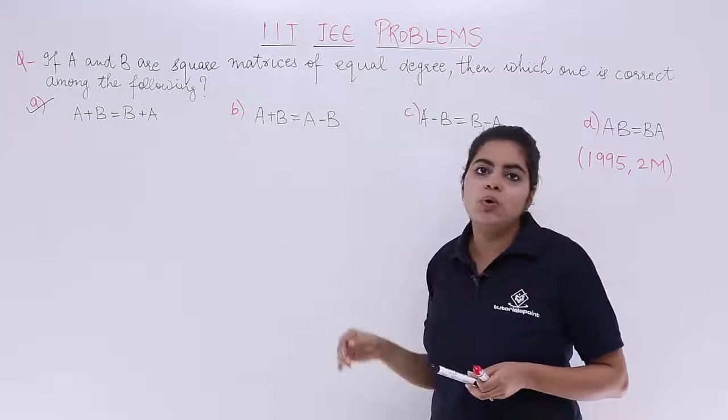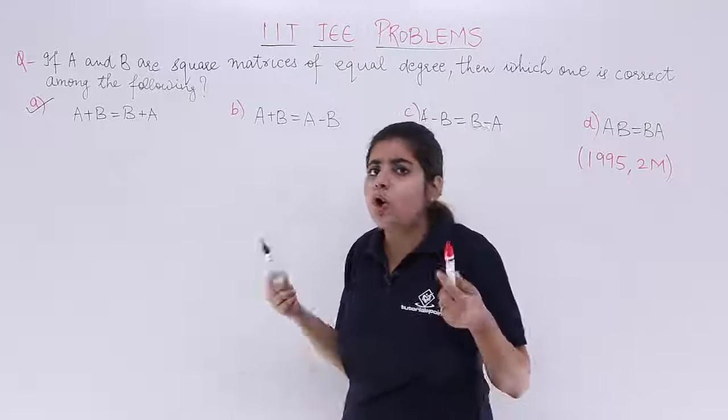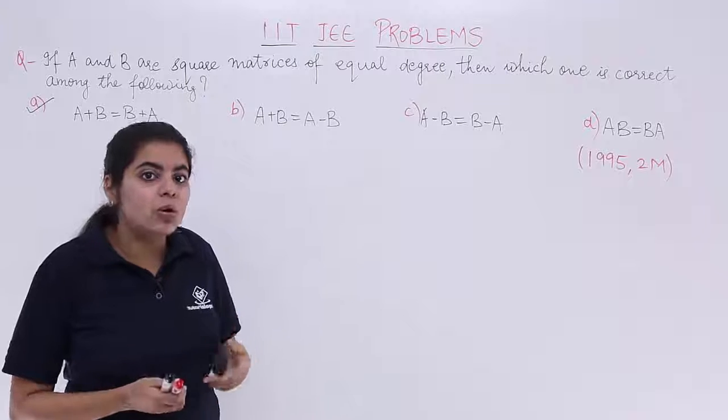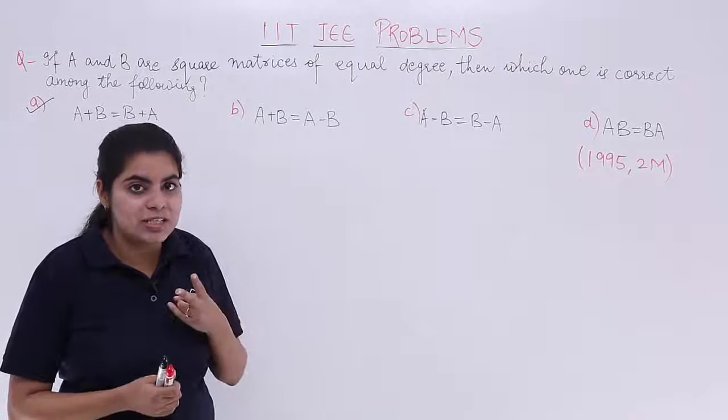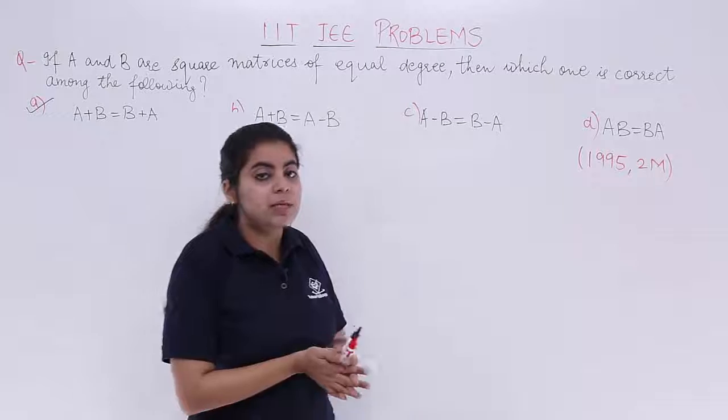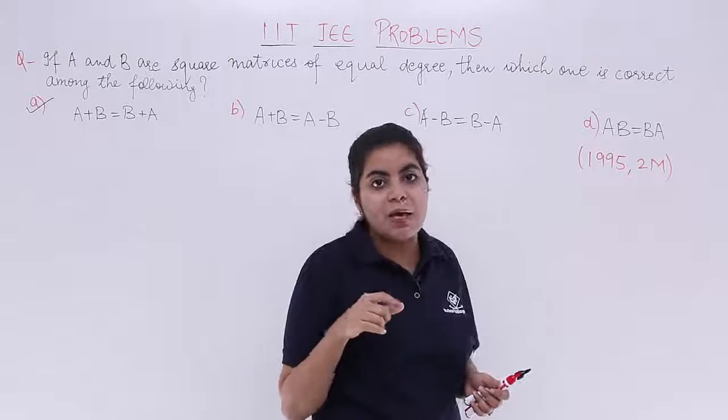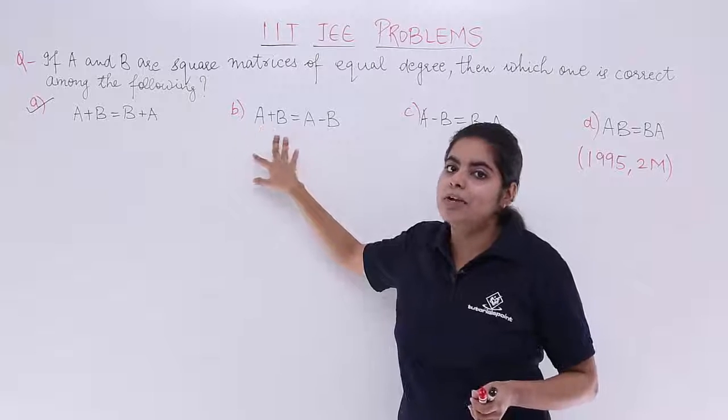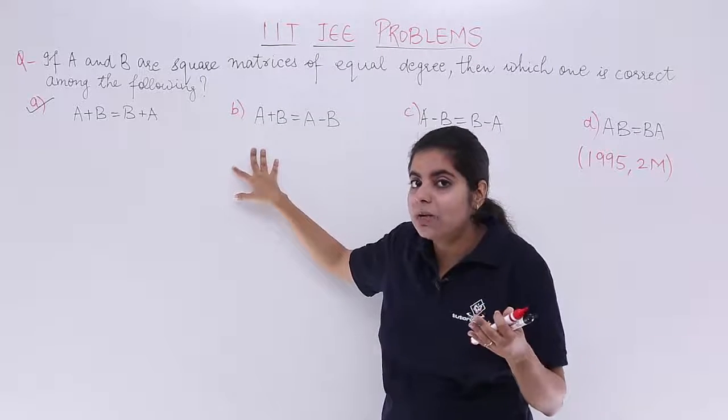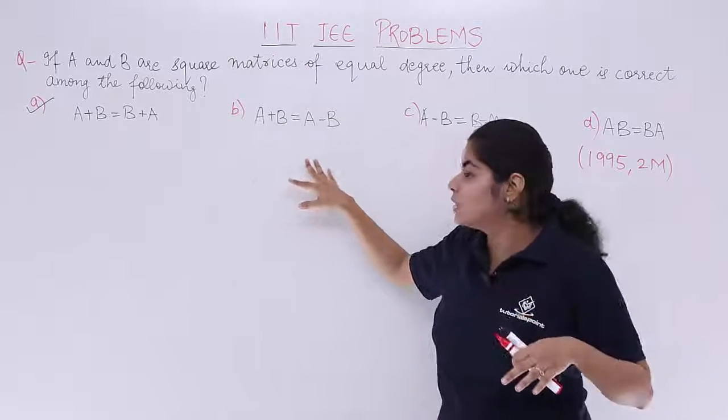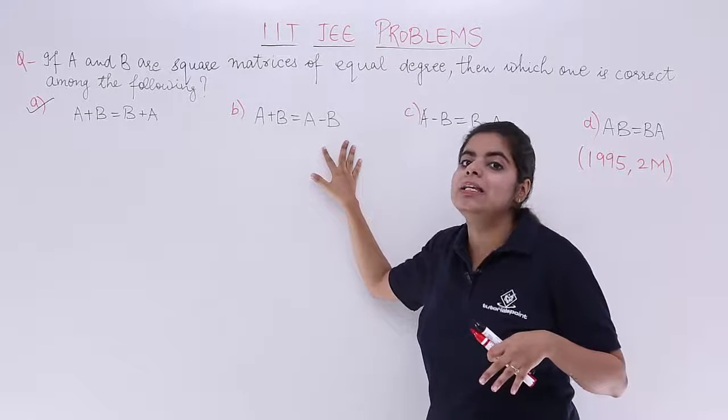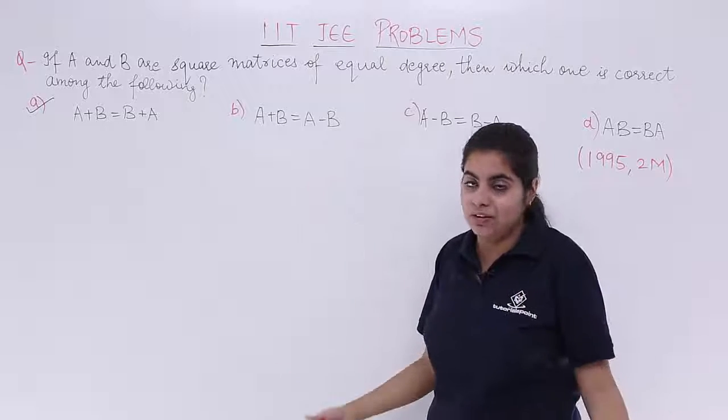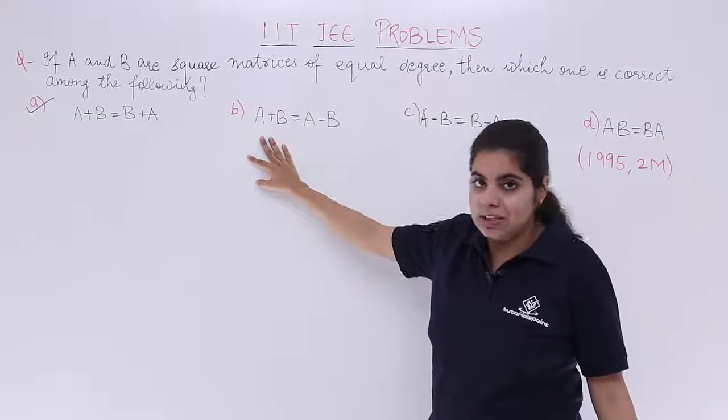Option B is A+B = A-B. It is not always the case that addition equals subtraction. It can only be possible when the second matrix is a null matrix. See, if A is a given matrix and B is a null matrix, then A plus null matrix is again the first matrix, which is also equal to A minus null matrix, because adding 0 or subtracting 0 does not change anything. So B is not the answer.